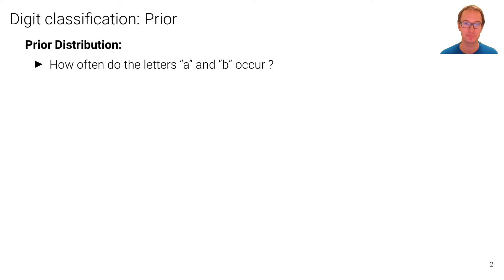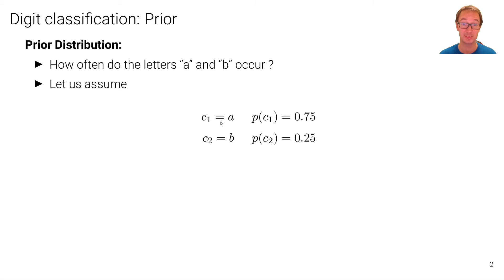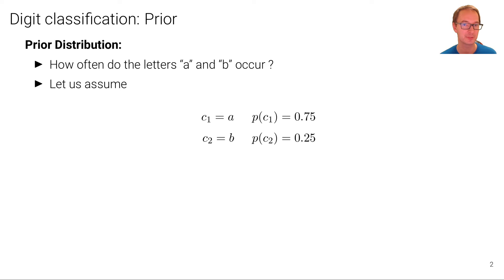We can approach this problem by thinking about the prior distribution of these digits: how often do the letters A and B actually occur in natural text? A is a rather common letter, so it might occur three times more often than the letter B. So let's assign the probability for class 1 (letter A) to be 0.75 and the probability for class 2 (letter B) to be 0.25, reflecting that A's occur more frequently in natural text than B's.